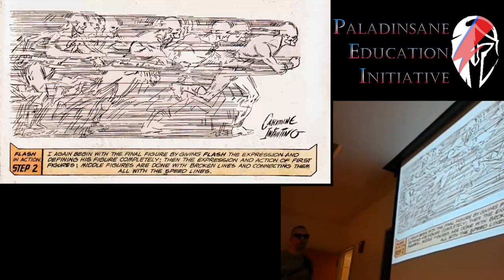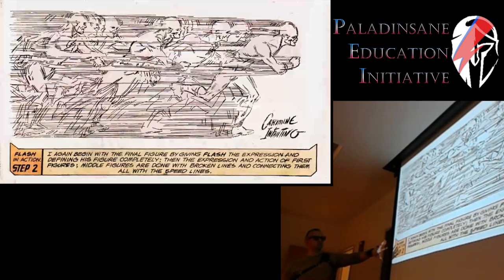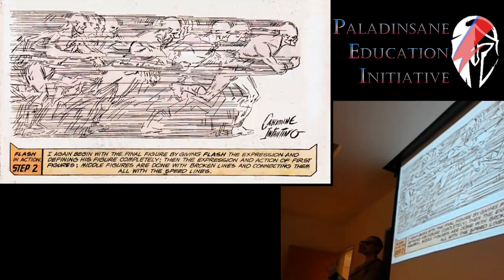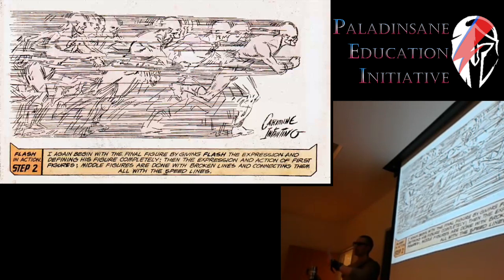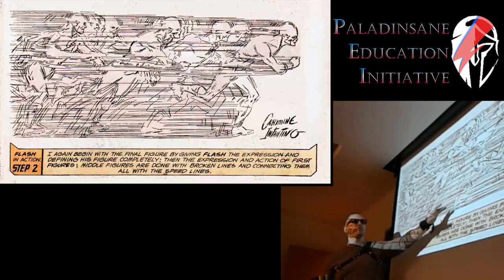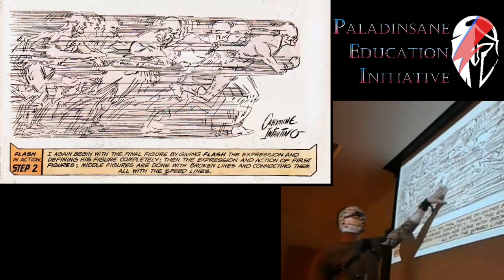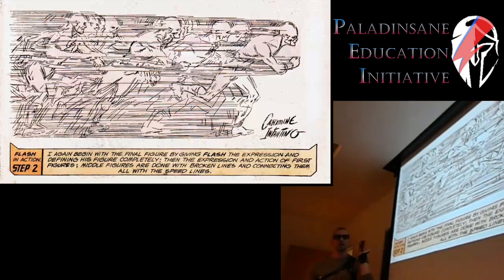Here's an example of a drawing schema: Carmine Infantino created a very famous page where he would teach you how to draw the Flash. If you were a young aspiring comic book artist, this was page two of a step-by-step spread — start with this, do this, add this. This became part of the schema for drawing the Flash: use multiple images, use action lines. That's what you do when you draw the Flash.